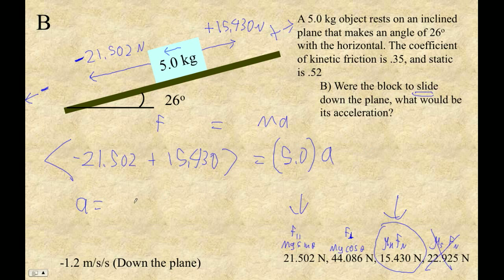So A equals negative 1.214 meters per second squared. The negative means down the plane. Now just be careful, if you say negative 1.2 down the plane, you might be actually saying up the plane. So I put it in parenthesis. The negative means down the plane. Ta-da.